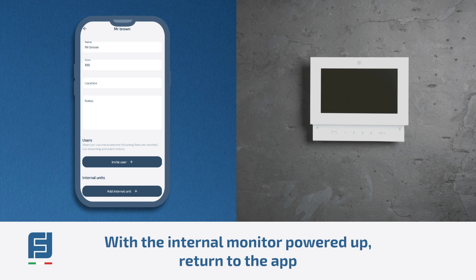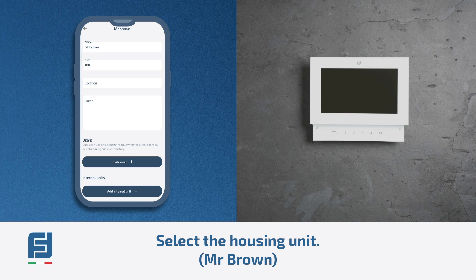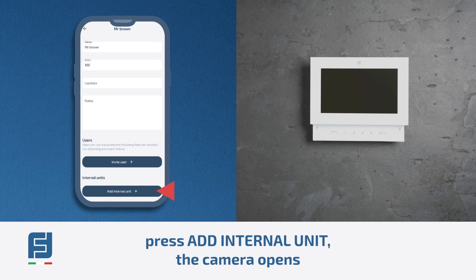With the internal monitor powered up, return to the app. Select the housing unit — Mr. Brown — and press 'Add Internal Unit'.